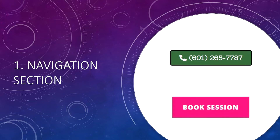You need to have contact information in your header or on top of your header. This can be in the form of a big red button that says 'Contact Us,' 'Book Session,' or something similar. Testing has shown that a red colored button attracts more attention than other colors. You should also have your phone number at the top.